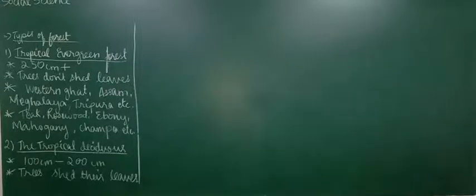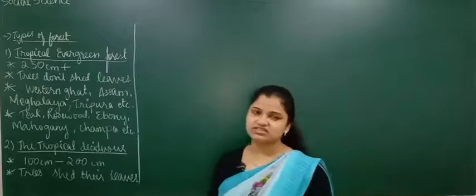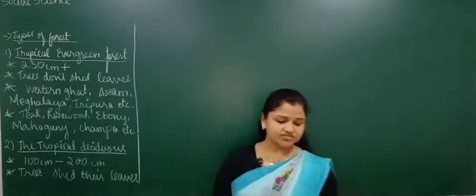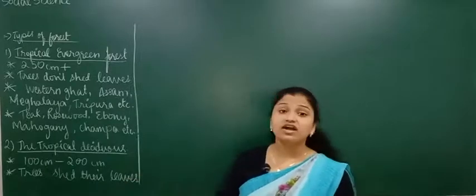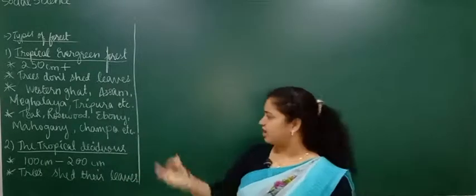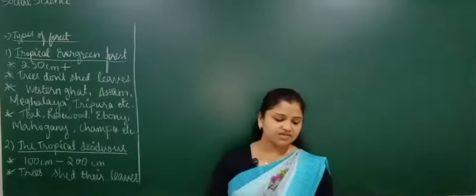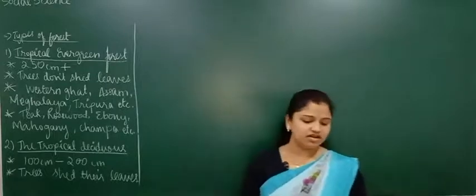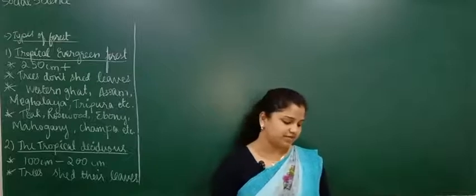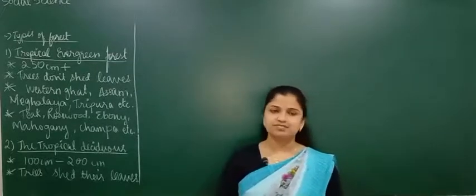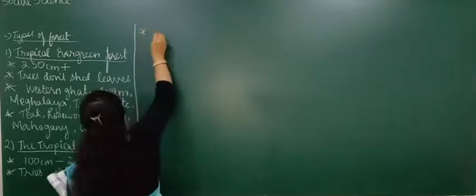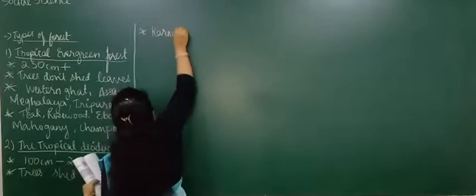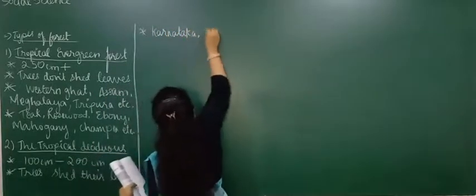When you compare and study, you always remember better. Tropical deciduous forest is found in Maharashtra, Karnataka, Tamil Nadu, Kerala, Chhota Nagpur Plateau, hills of Himalaya, parts of Odisha and West Bengal. These are the areas receiving 100 to 200 centimetres of rainfall where you will find tropical deciduous forest.